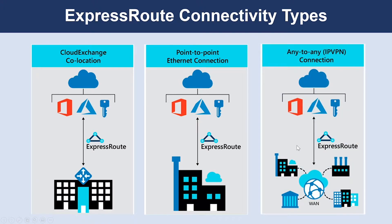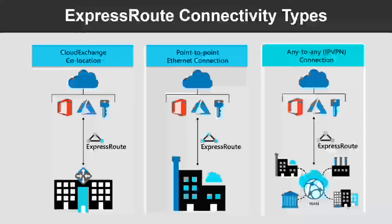The third type is Any-to-Any. With the Any-to-Any network method, you integrate your WAN with Azure by using an IP virtual private network provider. This connection type offers links between branch offices and data centers. When enabled, the connection to Azure is similar to any other branch office connected via the WAN.